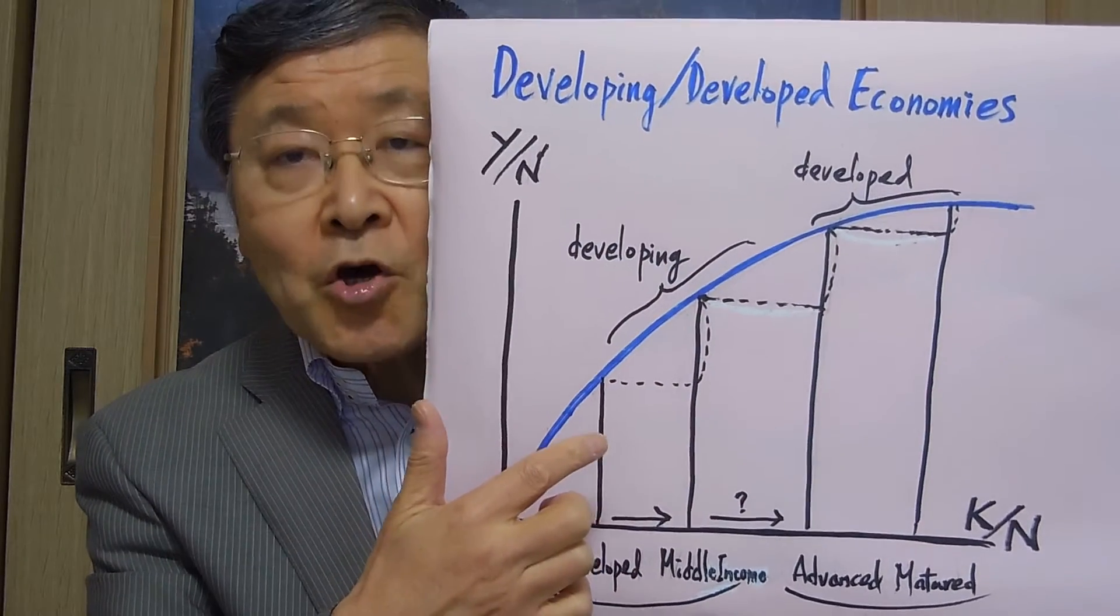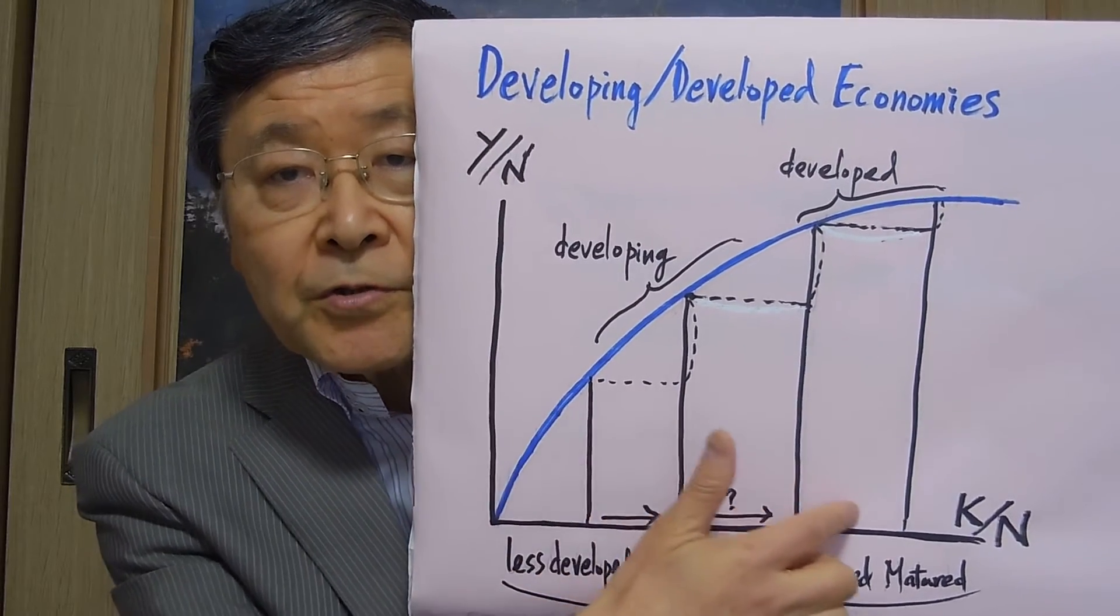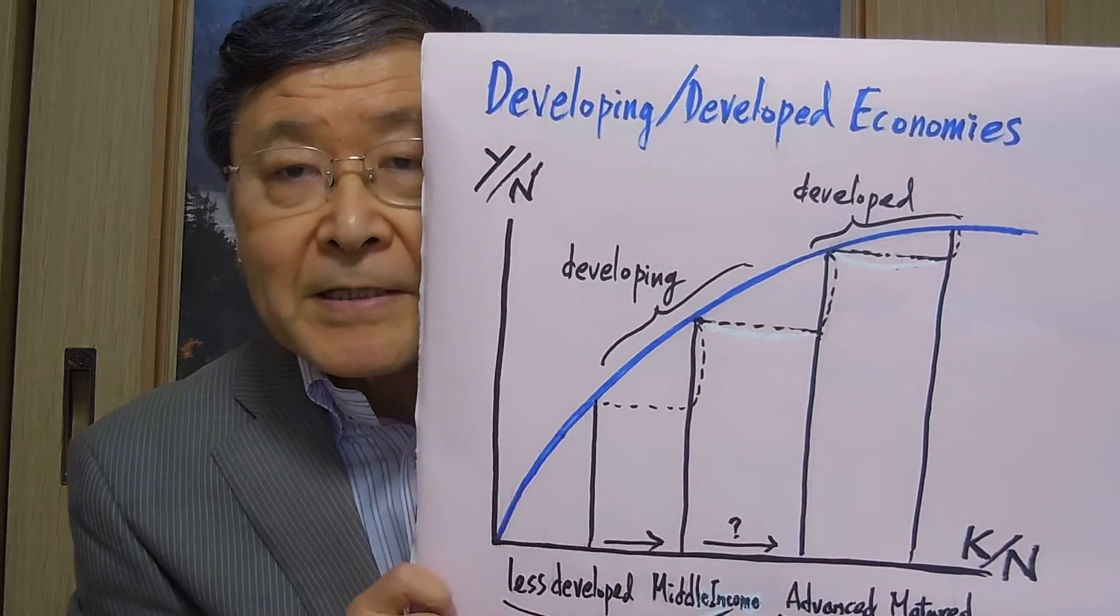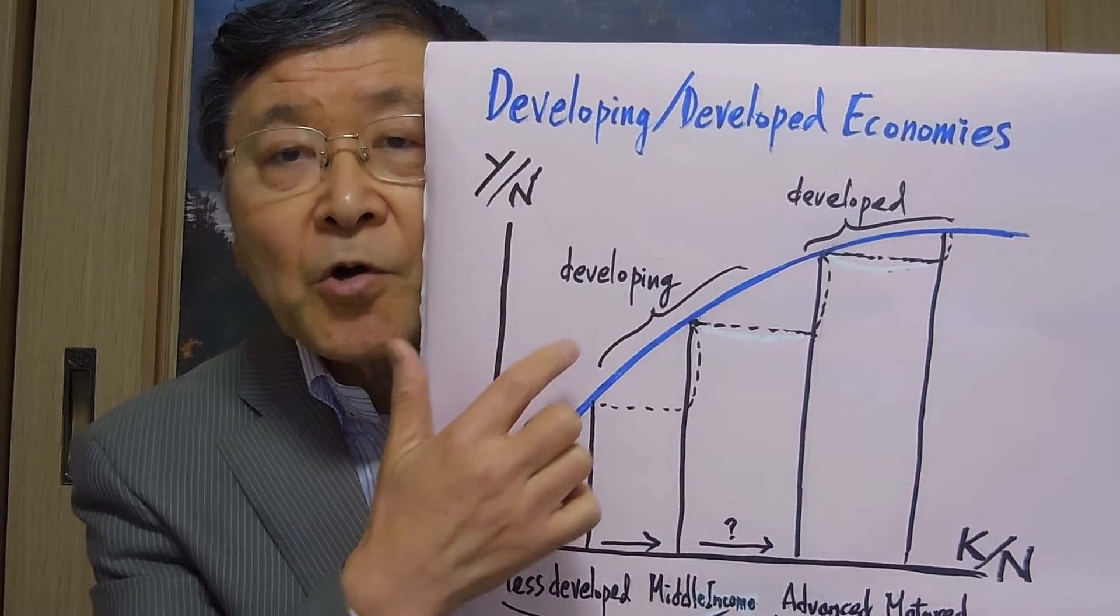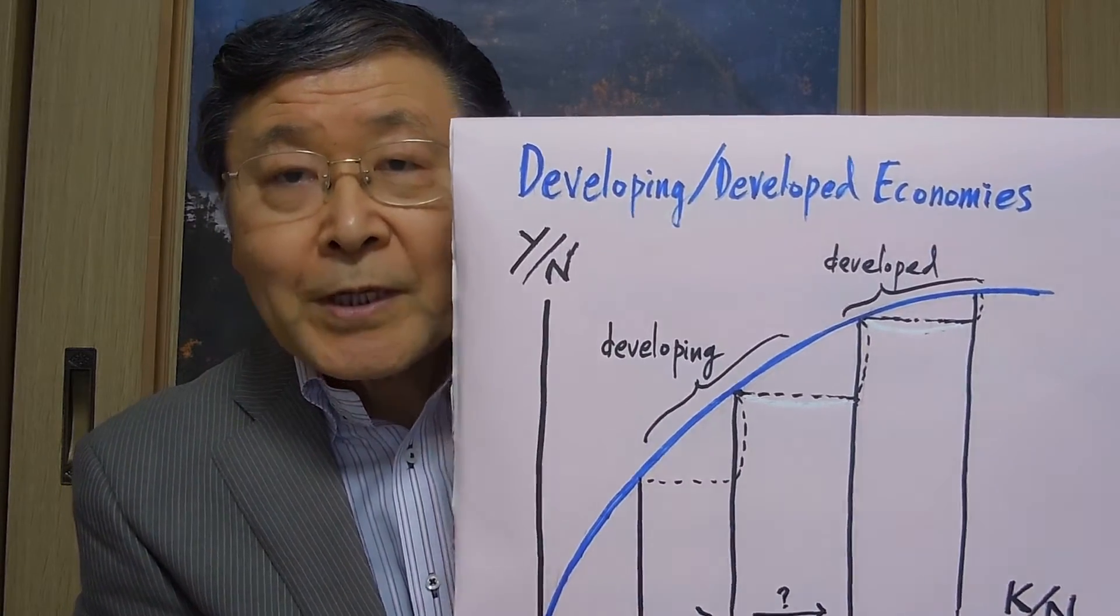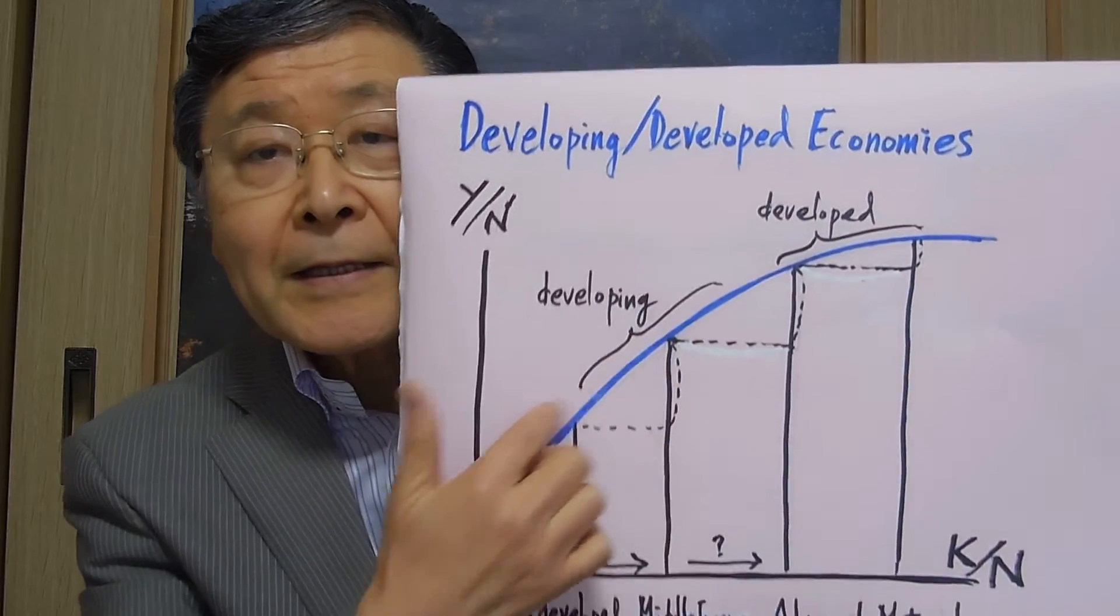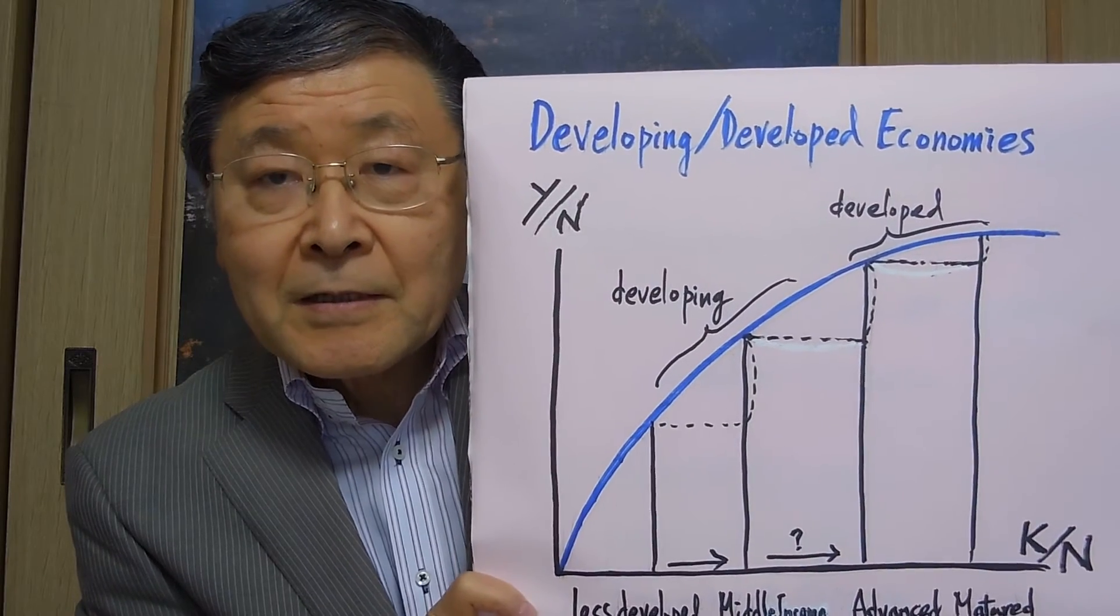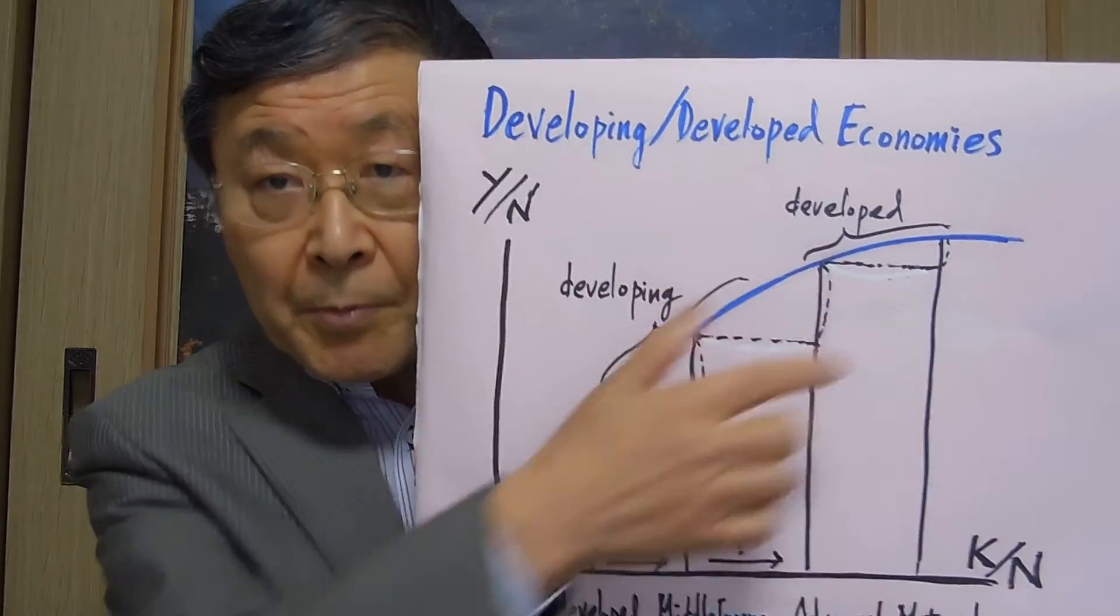And then Solow model implies that this process will continue to converge into somewhere here, the steady-state equilibrium level at the advanced level. So, the developing economies will eventually grow into the developed stage. However, in reality, we can see a clear distinction, division between developing economies on one hand and developed economies on the other. And very few economies have been able to break out of the developing stage into the developed stage.